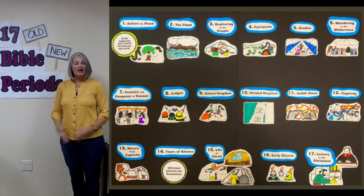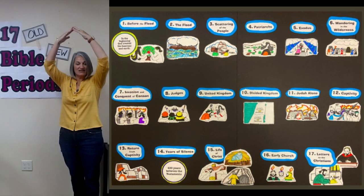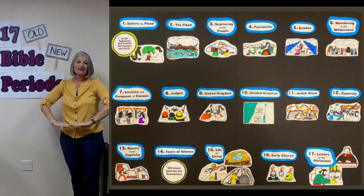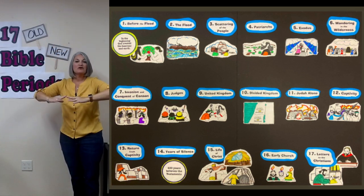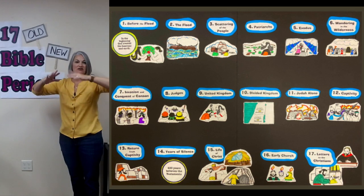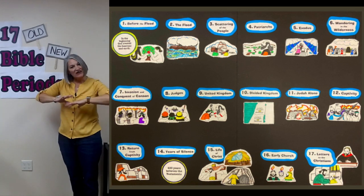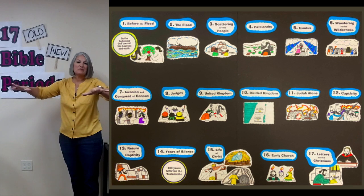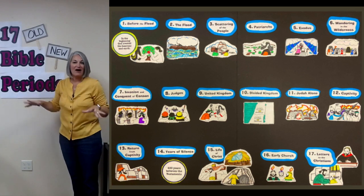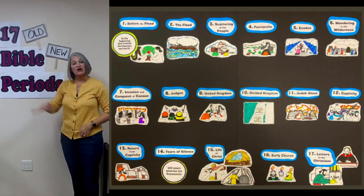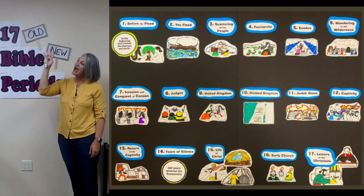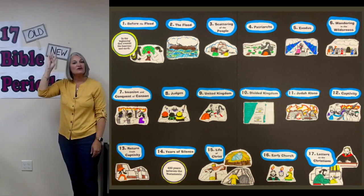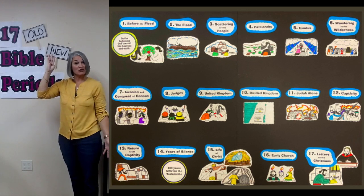Before the flood, we do the creation and we bring it down. The flood, we move our fingers and we move it slowly up like flood waters. And then scattering of the people, we move those people out and about. Patriarchs — this is the sign for Father. So this is the sign we use for patriarchs, and our four fingers are a good reminder of who those patriarchs were.